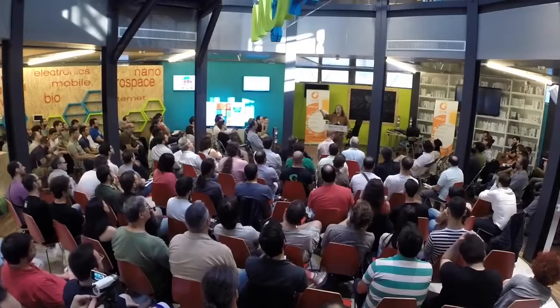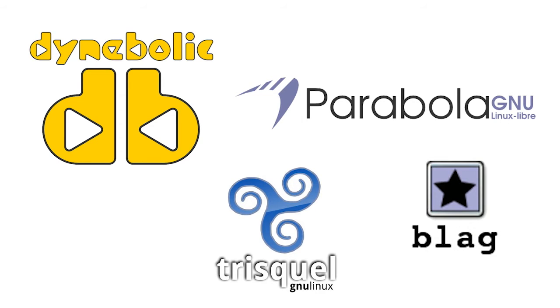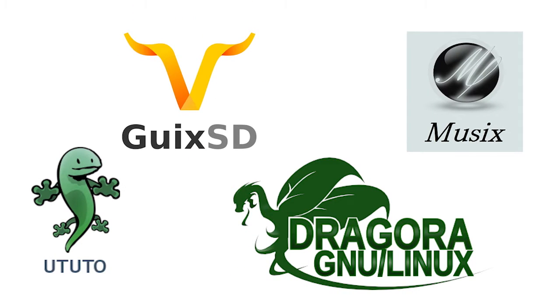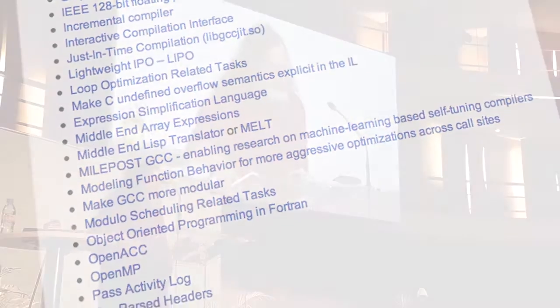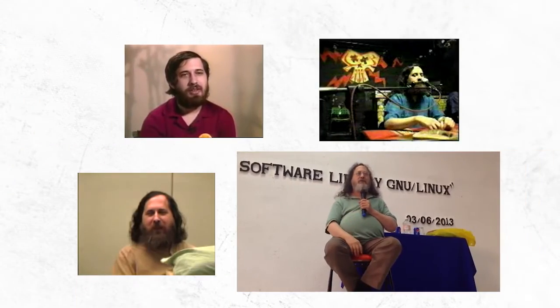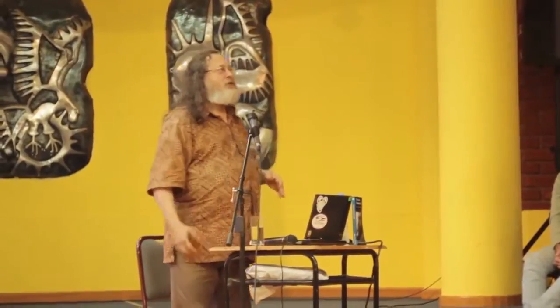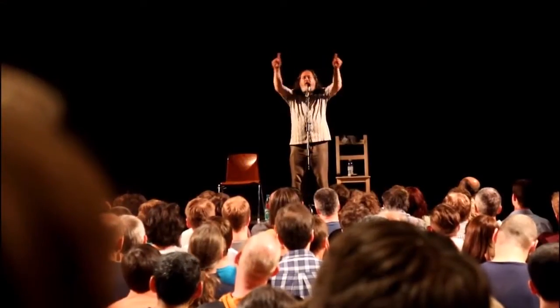GCC's retargetability has made possible low-cost software development for novel hardware, allowing specialty hardware enterprises to exist and compete. Its design has allowed it to survive and thrive through three decades of innovation in compiler technology and processor design. Thanks to GCC and Richard Stallman, a complete ecosystem of free software continues to attract legions of developers — one that continues to make a lasting contribution to computing.